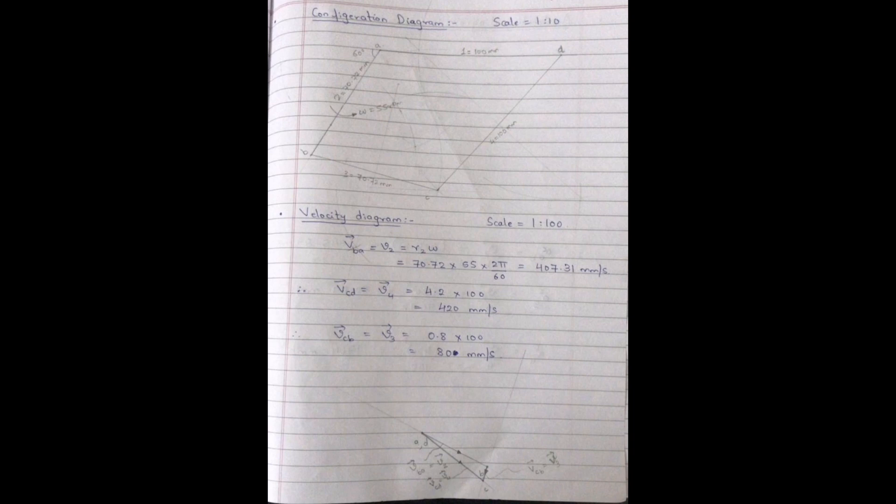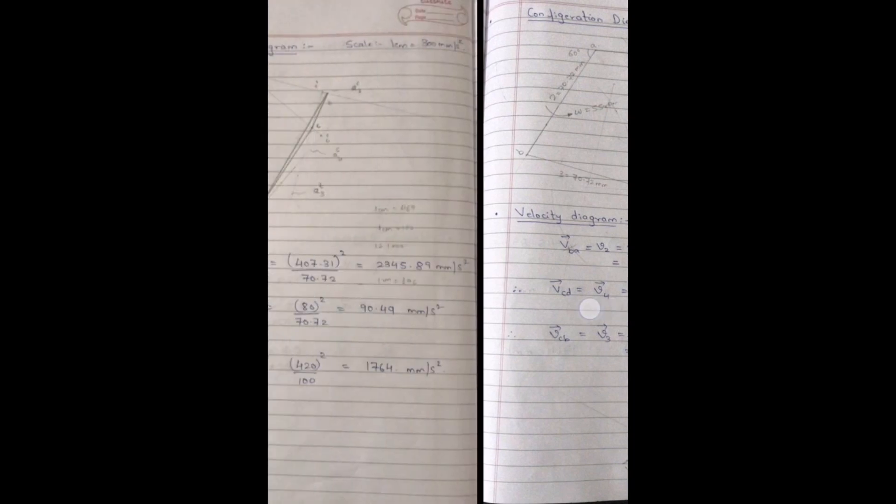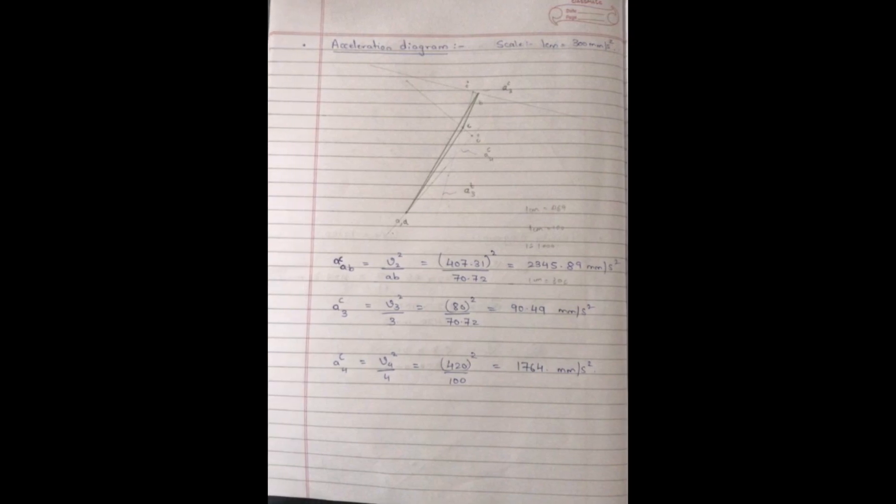For the acceleration diagram, we need the centripetal acceleration. We use the velocities we got from the velocity diagram to find the centripetal acceleration that is v squared by the link length. We assume that there is no tangential acceleration for the input link. So we draw the line representing the centripetal acceleration as shown in the acceleration diagram over here which also represents the resultant acceleration for the input link. Now, we draw the lines representing the centripetal acceleration for the links 3 and 4. We then draw perpendicular lines to them which represent the tangential acceleration. Then, we join the intersection point to A and B and now we get the resultant acceleration for both the links as seen over here.